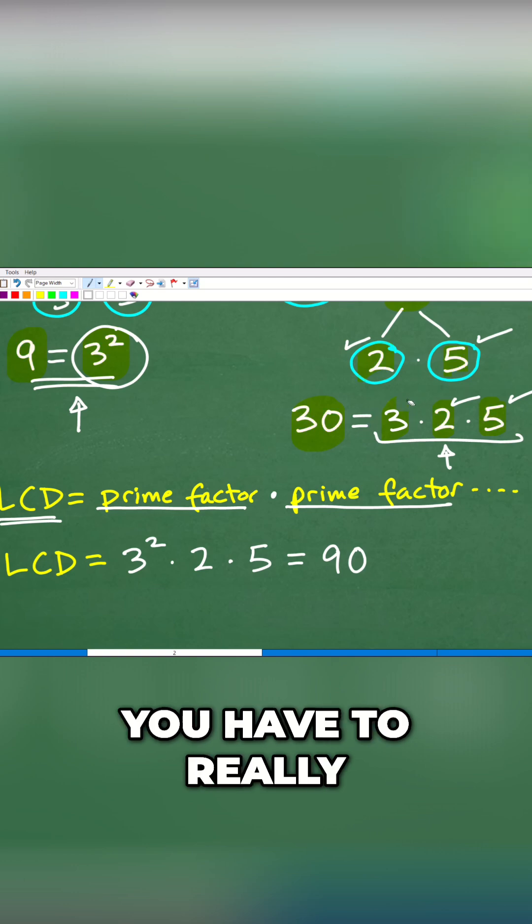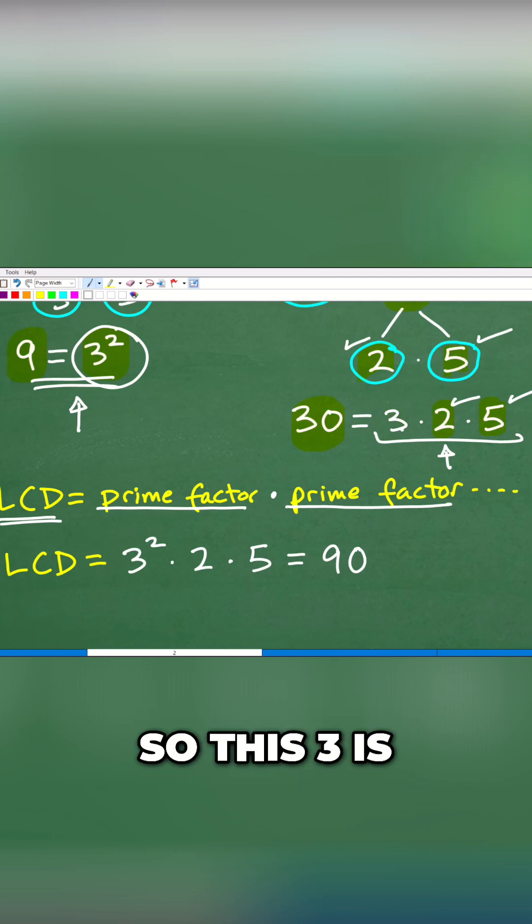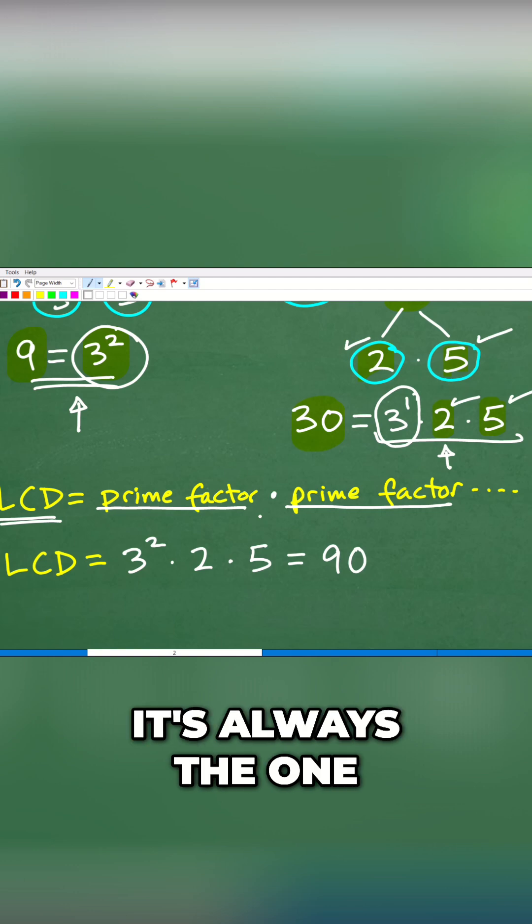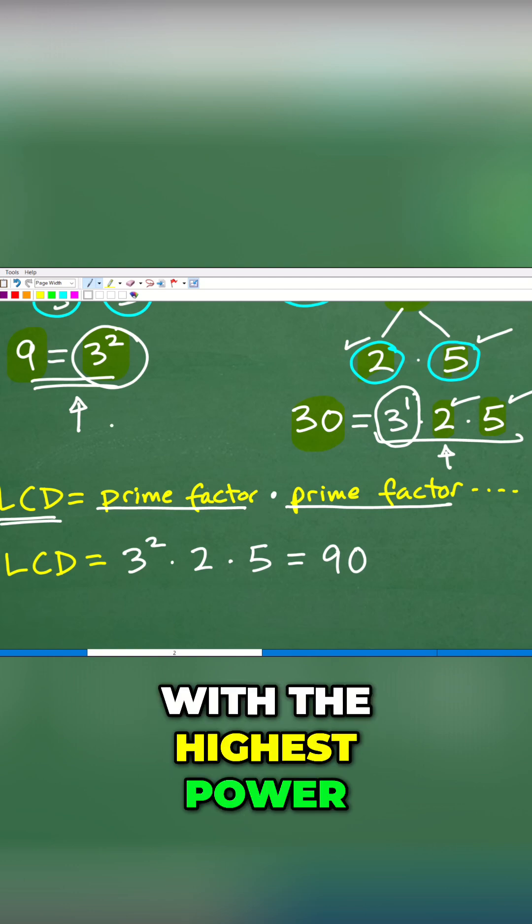And this is where you have to really pay attention. So this 3 is 3 to the 1st. This one over here is 3 squared. So which 3 do we represent as a prime factor? It's always the one with the highest power.